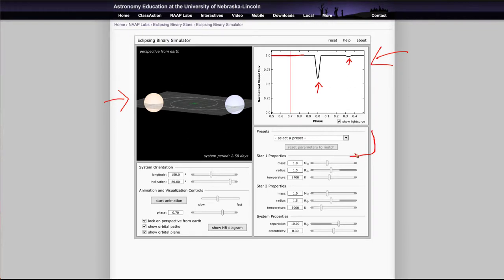There are various presets that you can use here, preset systems. And you can also adjust the properties of each of the two stars and the system themselves. And you can actually watch the animation if you want.